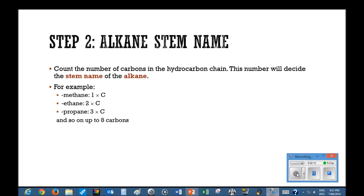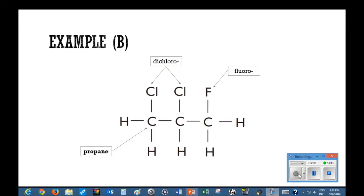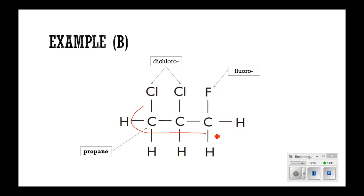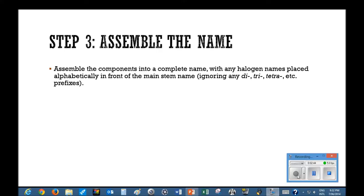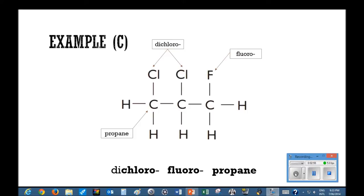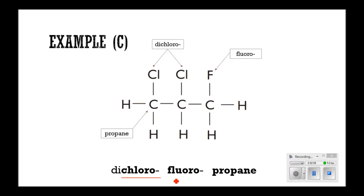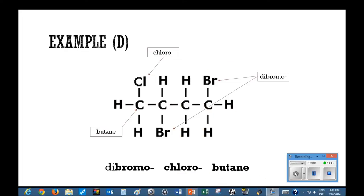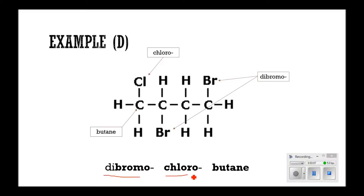In step two, you identify and name the alkane stem. To do this, you need to count the number of carbons in the hydrocarbon chain. If there's one carbon, the stem is methane; two is ethane; three is propane, and so on up to eight carbons. In this example, there are three carbon atoms, so the stem is propane. Step three involves assembling the components into a complete name, making sure that any halogen names are placed alphabetically in front of the main stem. For example: dichlorofluoropropane, or dibromochlorobutane.